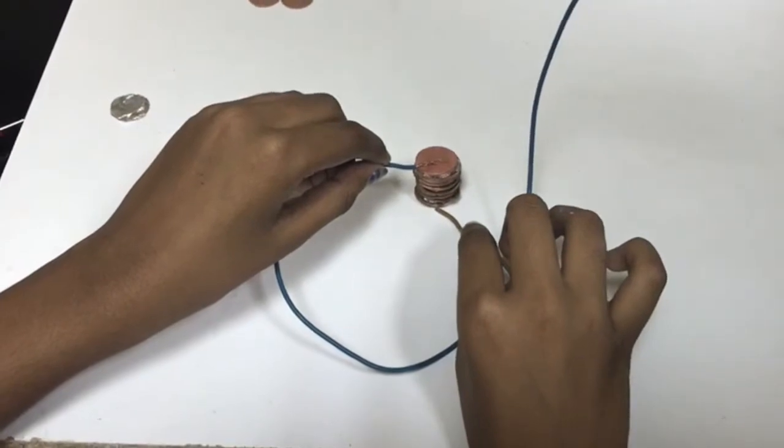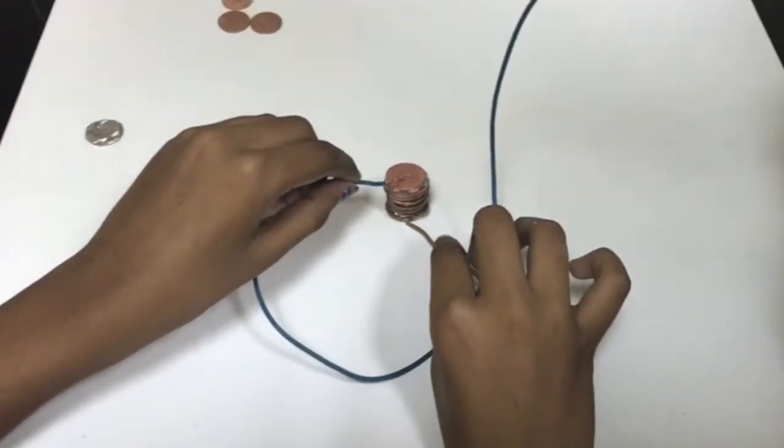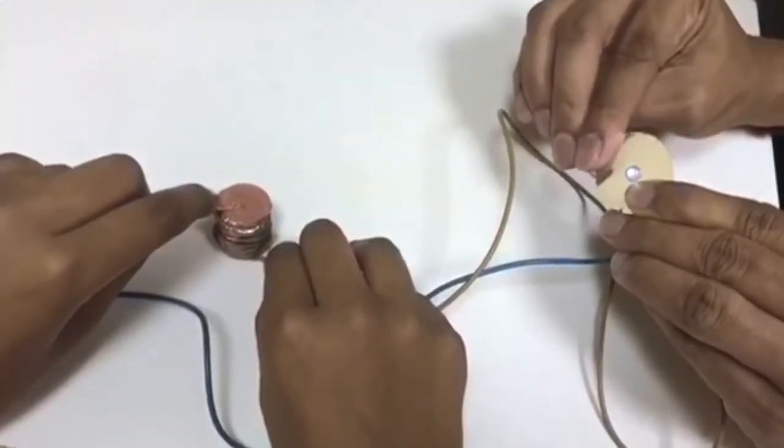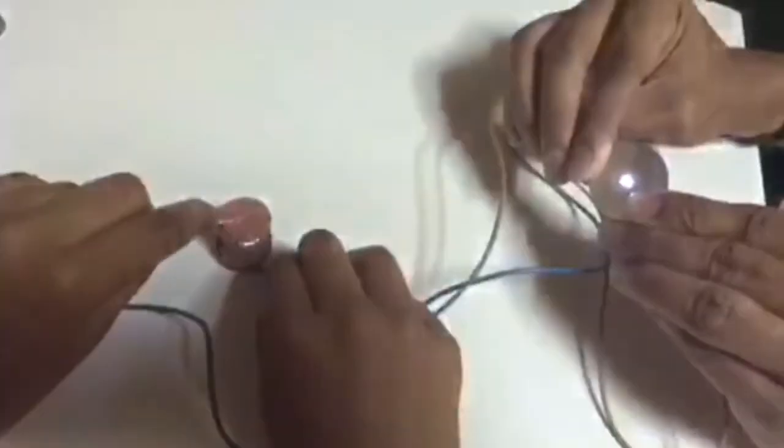Connect the wires at the top and bottom of the battery and the other ends to the object to be powered. In this case, it's an LED. As you can see, the LED is quite powerful.